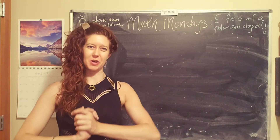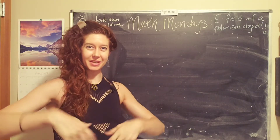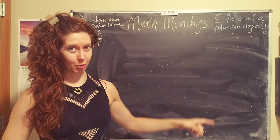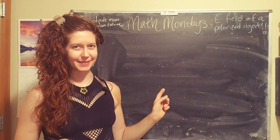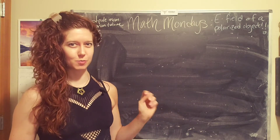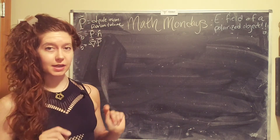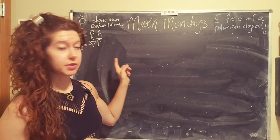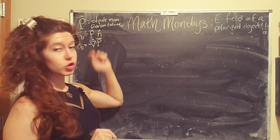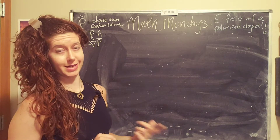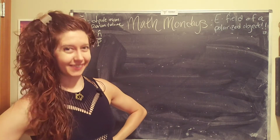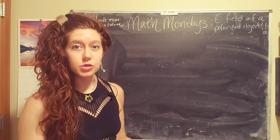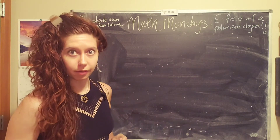Hello, lovely humans! Jen Foxbot here. In this part two of finding the electric field of a polarized object, we are going to look at a specific example and use the equations for bound surface charge and bound volume charge densities to calculate the electric field that is induced by an external electric field.